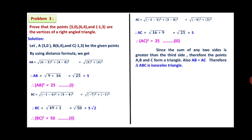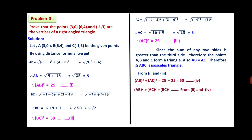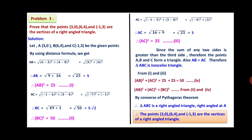Also, AB = AC = 5, therefore triangle ABC is an isosceles triangle. From statements 1 and 3: AB² + AC² = 25 + 25 = 50, statement 4. From statements 2 and 4: AB² + AC² = BC². By the converse of the Pythagoras theorem, triangle ABC is a right-angle triangle with the right angle at A. Therefore the points (3, 0), (6, 4), and (-1, 3) are the vertices of a right-angle triangle. This could be asked for 3 or 4 marks.